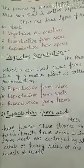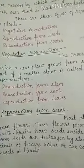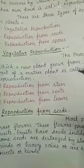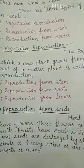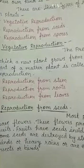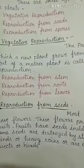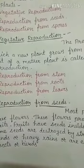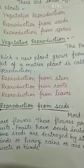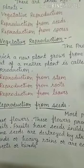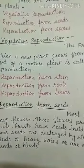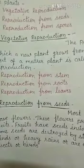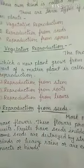Some plants reproduce from their stem. They are planted in the soil and after a few days the buds grow from the soil.